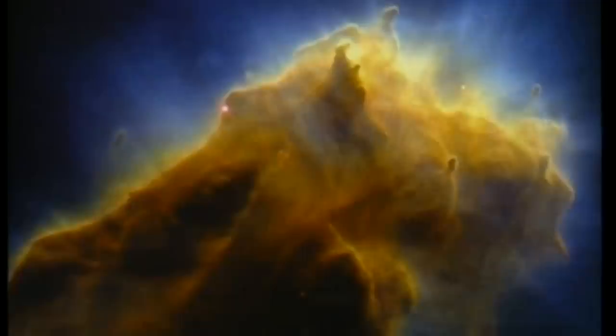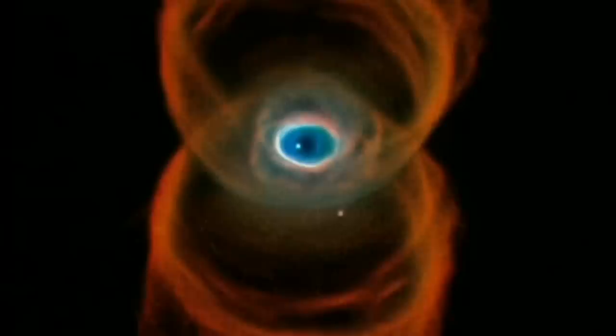Les piliers de la création, une des images les plus spectaculaires jamais prises dans le cosmos. Ils font partie de la nébuleuse de l'aigle, là où naissent des étoiles. Une étoile moribonde dans la nébuleuse l'œil du chat. Une autre dans la nébuleuse du sablier. Ce sont les chefs-d'œuvre du télescope spatial Hubble.